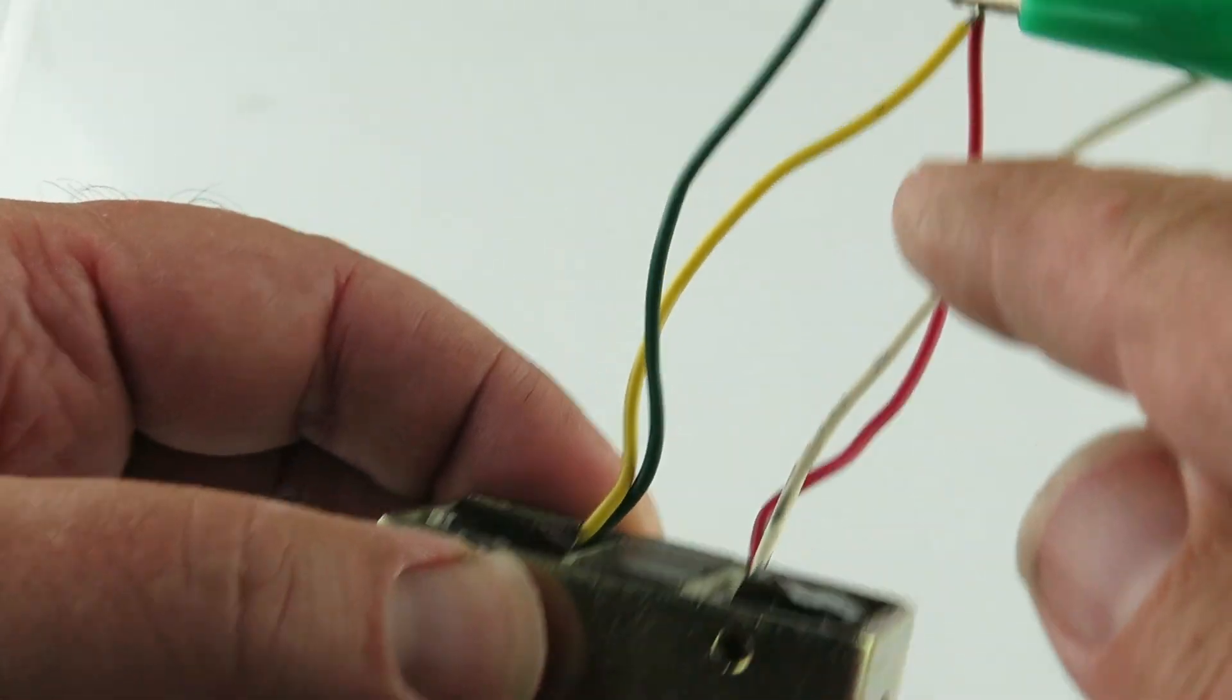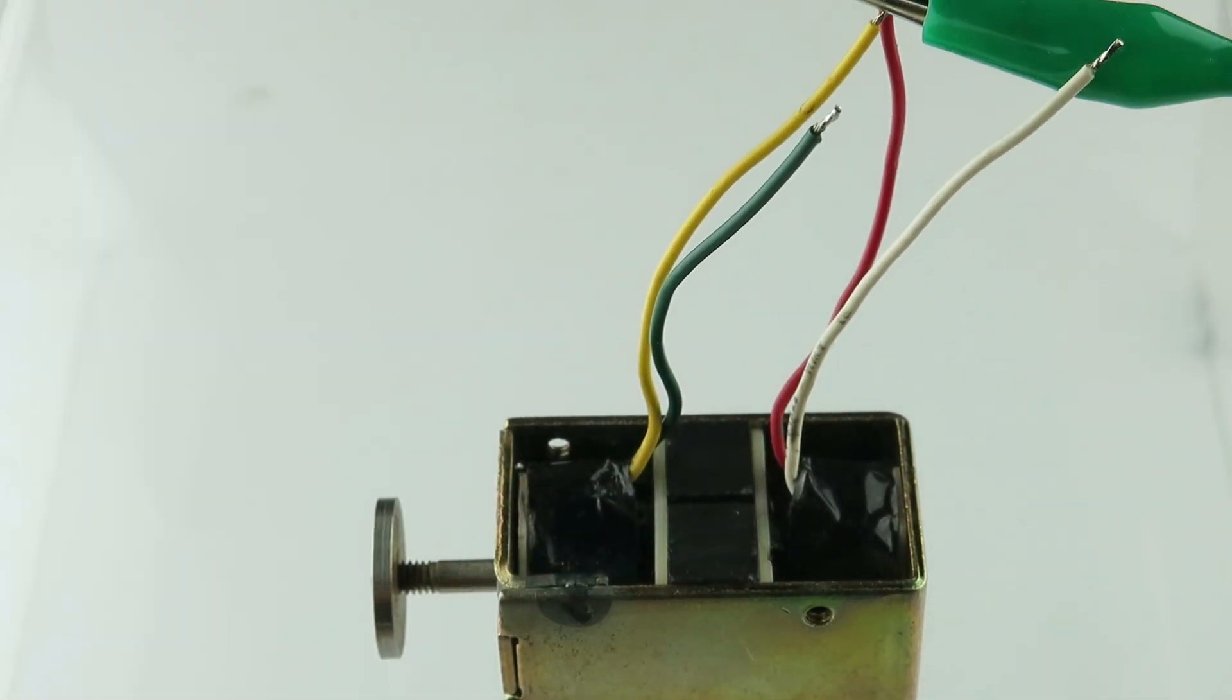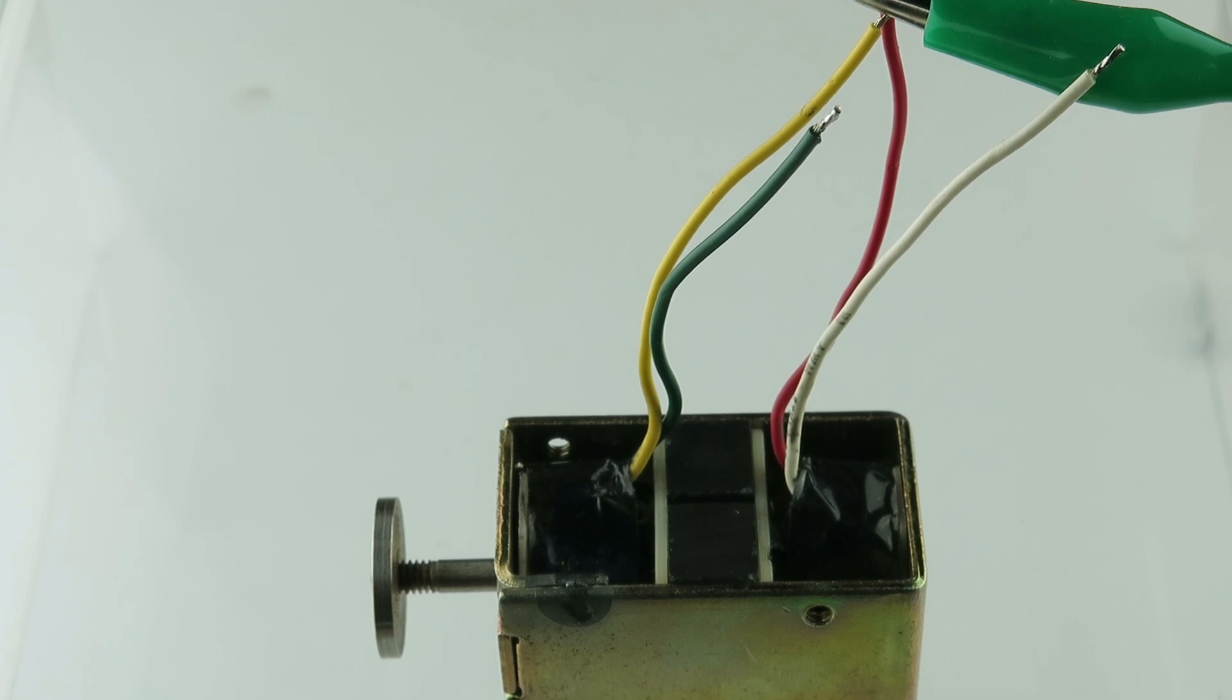The yellow and red are the positive, and the white and the green are the negative. I have three 9-volt batteries in series to provide the voltage.